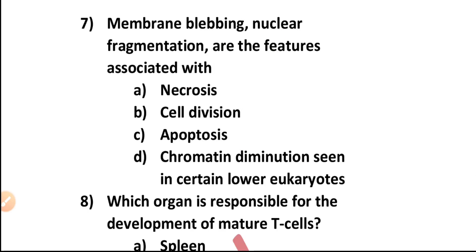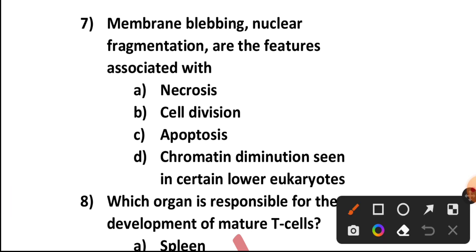Question number seven: Membrane blebbing and nuclear fragmentation are features associated with — necrosis, cell division, apoptosis, or chromatin diminution seen in certain lower eukaryotes? These features are associated with apoptosis, that is programmed cell death.